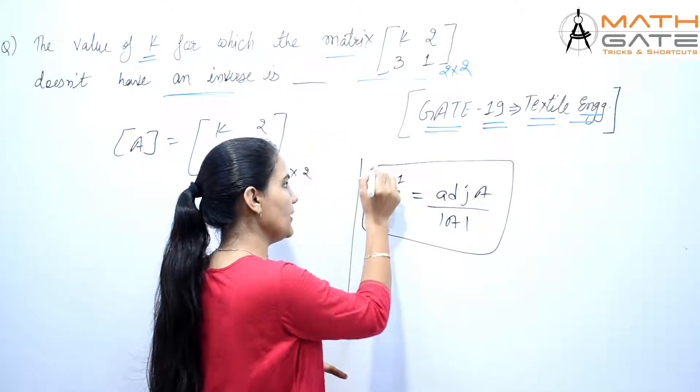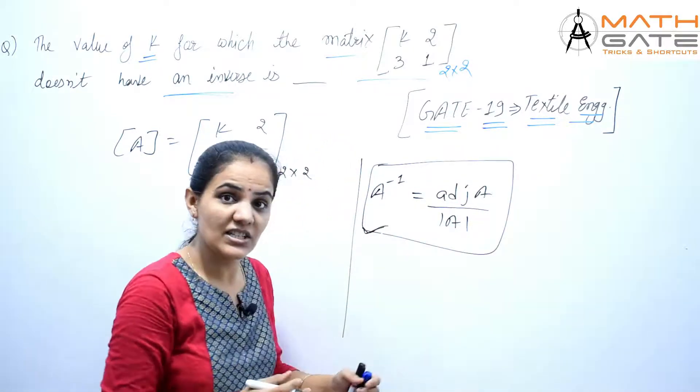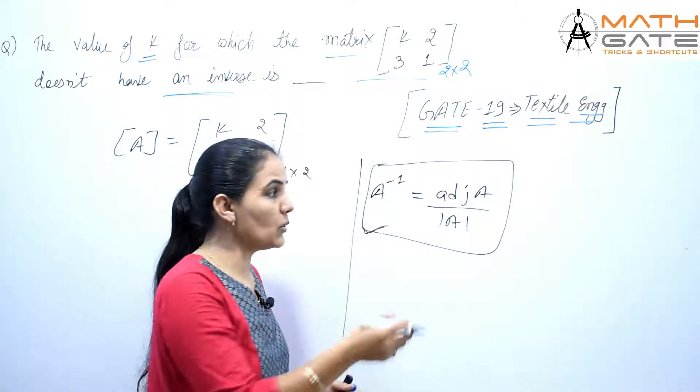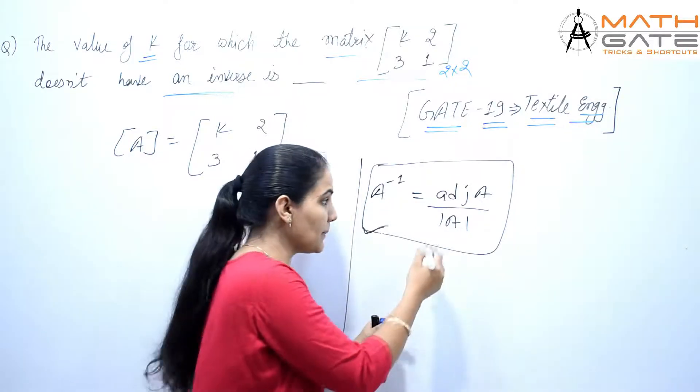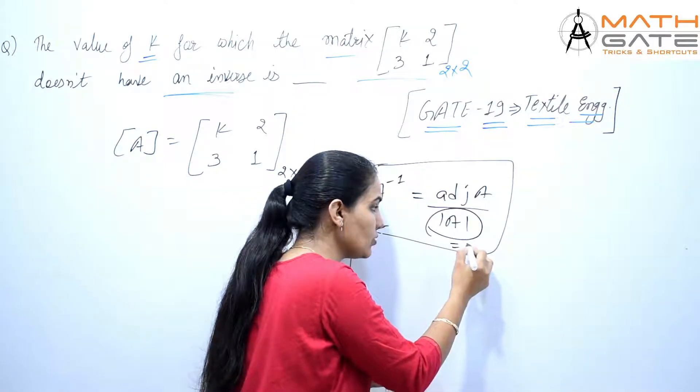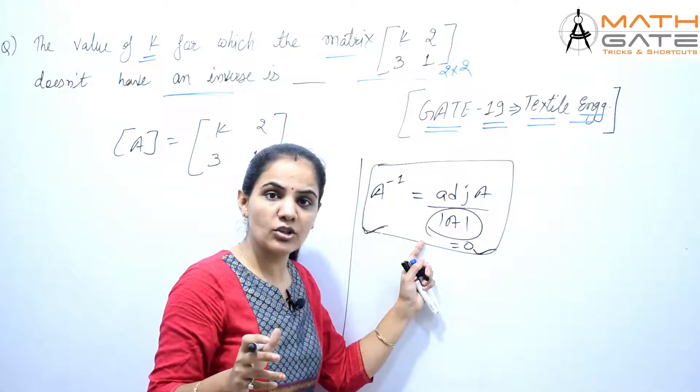We know the basic formula: inverse equals adjoint A upon determinant of A. Now, for this matrix to not have an inverse, we need to make the determinant zero.